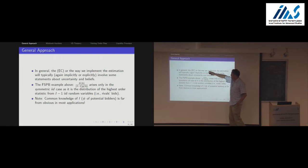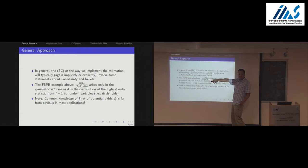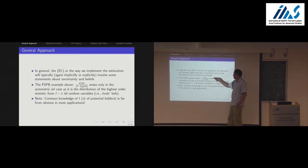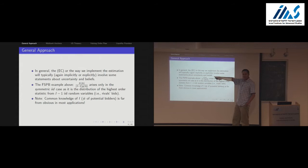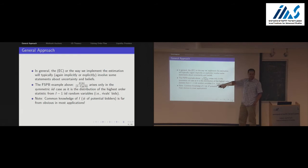To get that equation you have to assume symmetric IID types. We know from asymmetric first-price auctions things would look very different. Without independence there would be some conditioning. The only reason you get this beautiful expression is that the distribution of the first-order statistic from I minus one identically distributed random variables cancels out to this nice formula. Also, common knowledge of I — the number of bidders — is far from obvious. Take eBay: even though it's not a first-price sealed-bid auction, who knows what bidders know or think.